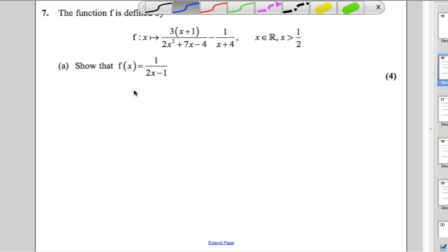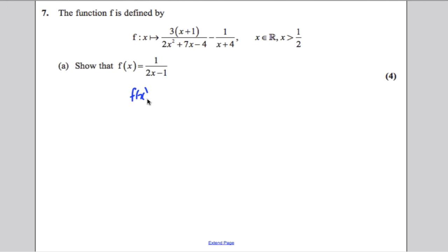So let's start off with the original function. f(x) we are told is equal to 3(x+1) over (2x²+7x-4), subtract 1 over (x+4). Now the reason I've left a gap here is stage 1 is to factorize. You must always try and factorize.